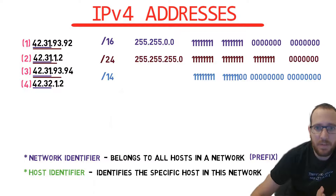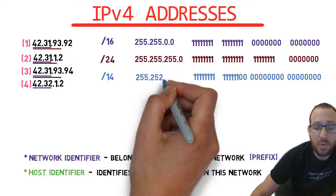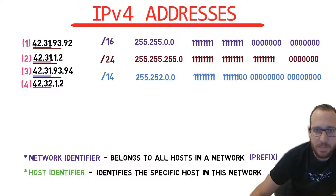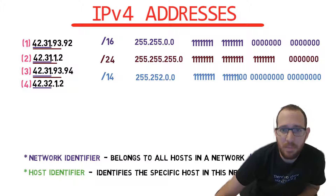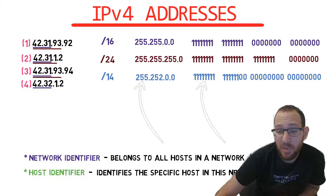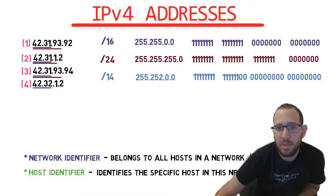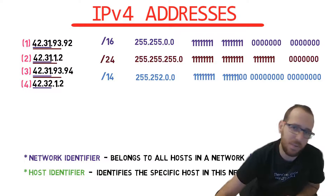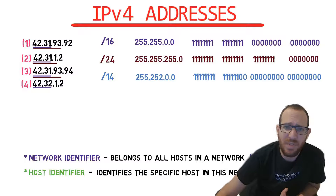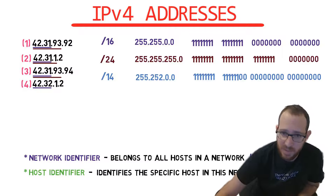So our subnet mask is 255.252.0.0. There's another easy way to make this conversion: we know that 8 ones in binary represent 255 in decimal, and 11 in binary is 3 in decimal. So we can simply subtract 3 from 255 and get 252. Binary to decimal conversions are not the most important part of this video, and using a calculator or Google should be enough.